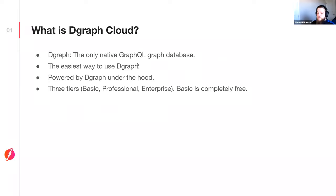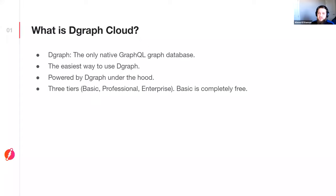Some of you might be asking: what is Dgraph Cloud? Let's start with Dgraph. Dgraph is the only native GraphQL graph database — it supports GraphQL natively, and nothing else like this exists. Dgraph Cloud is the easiest way to get started with Dgraph. It should take you two to three minutes to get your first GraphQL instance up, powered by Dgraph under the hood. We have three tiers: Basic, Professional, and Enterprise. Basic is completely free and you can use it forever, though there is a bandwidth limit.